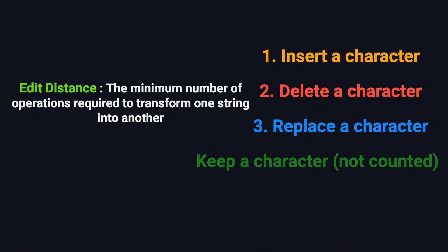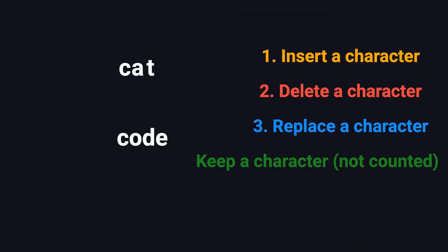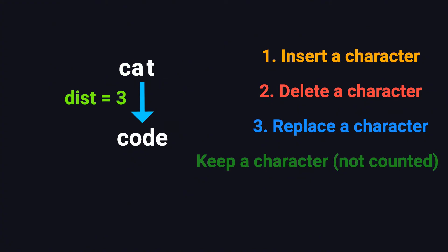To help you understand, let's walk through a simple example. Suppose we want to turn the word 'cat' into 'code'. Here's one way to do it: first, we keep the C — it matches, so no edit needed. Next, we replace the A with an O. Then we replace the T with a D. Finally, we insert an E at the end. That's three operations — two replacements and one insertion — and there's no way to do it with fewer edits, so the edit distance from 'cat' to 'code' is three.